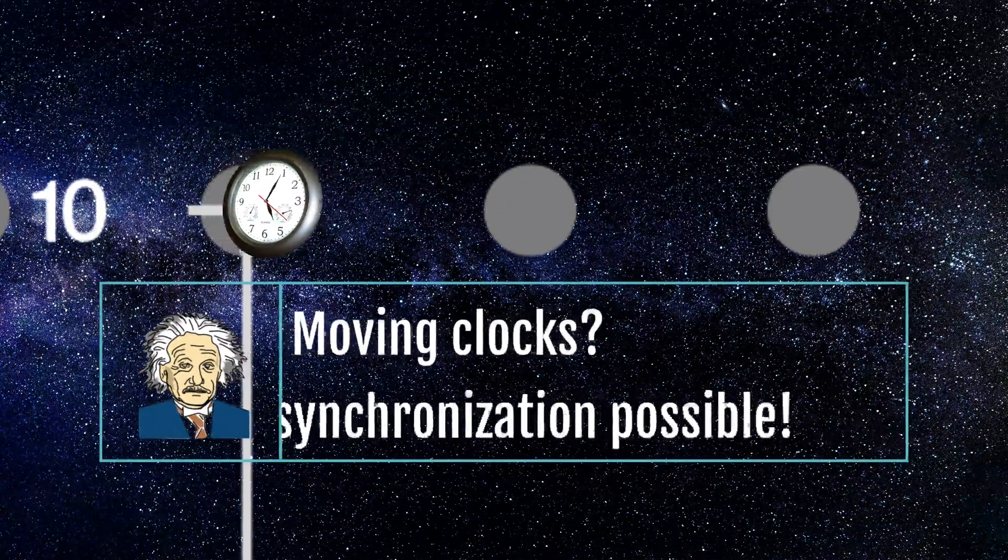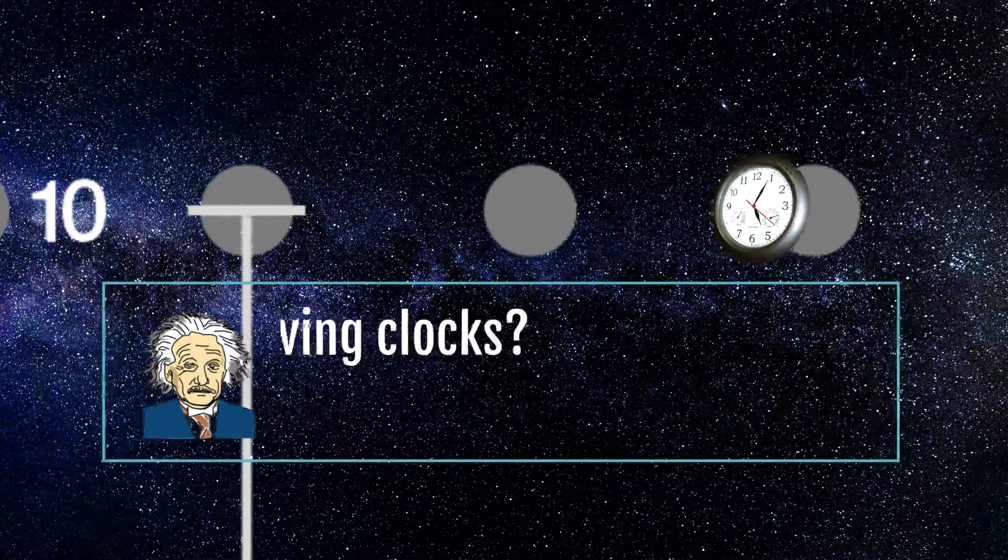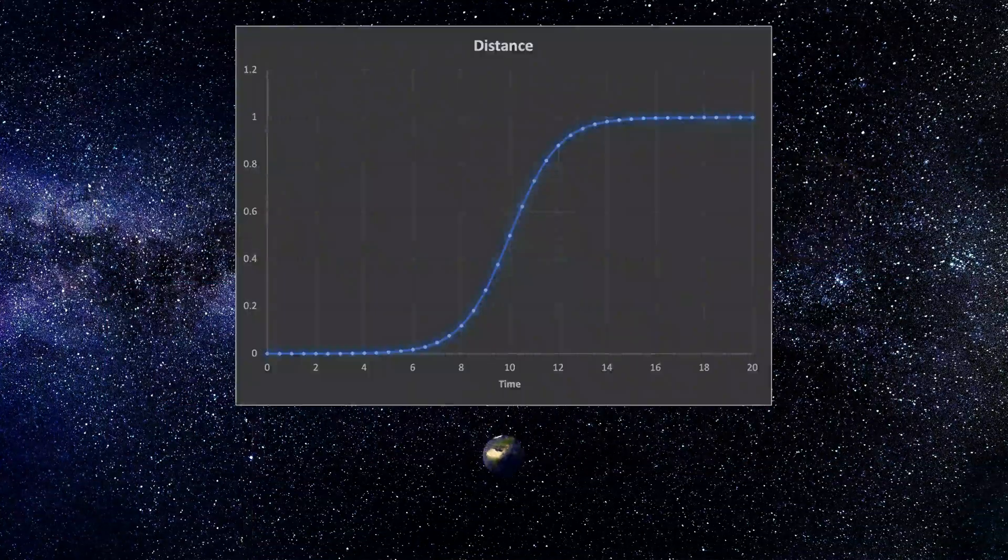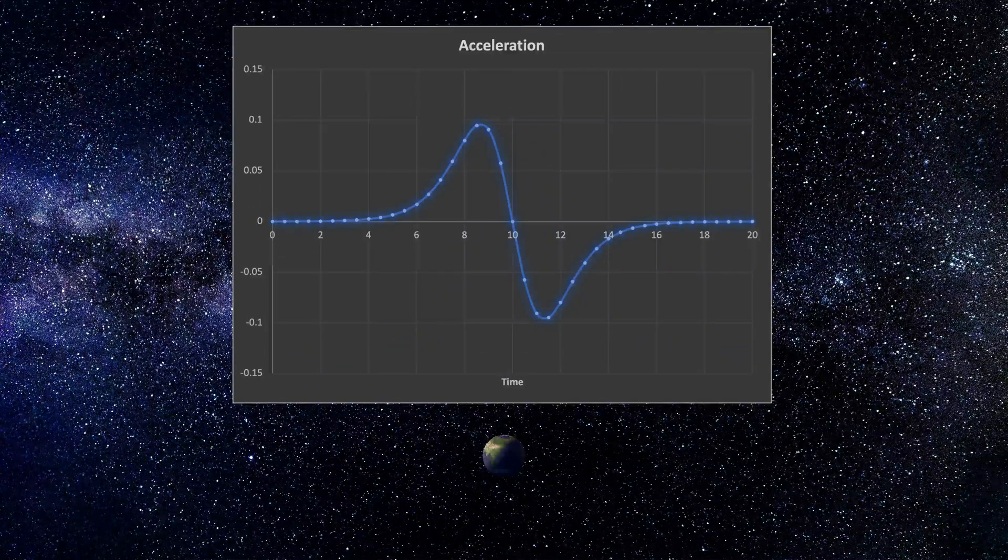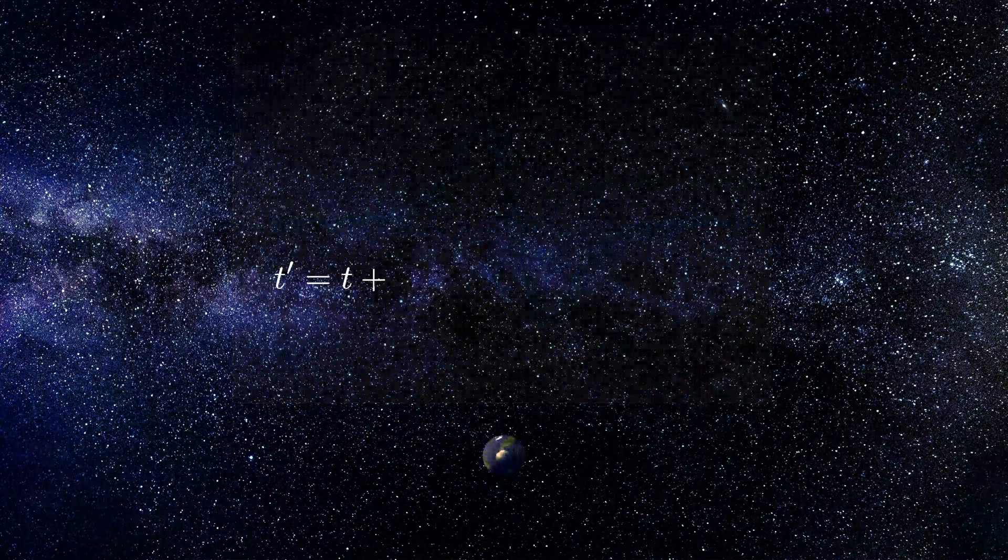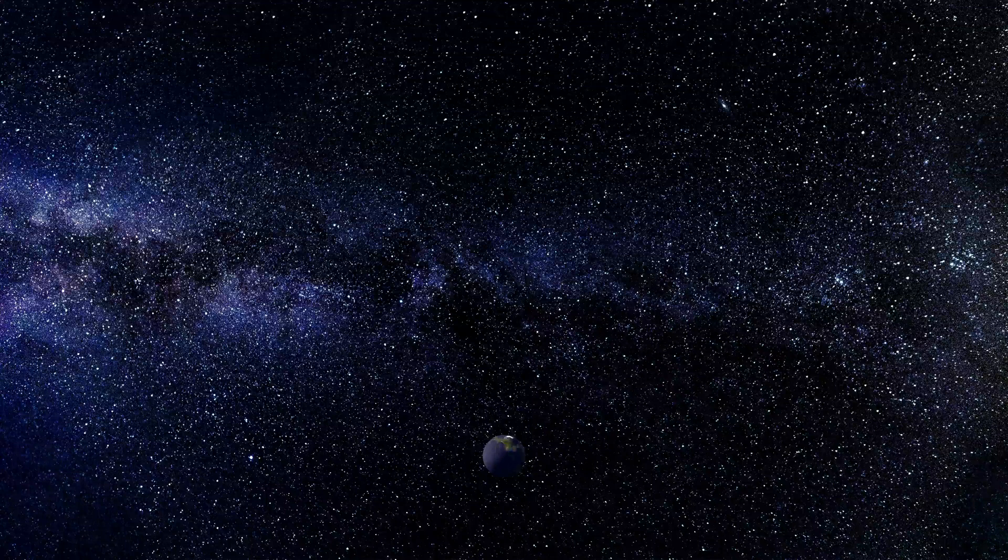Yes, moving them, accelerating and decelerating will destroy the synchronization. Let's say we know the velocity profile of each clock. We can pre-compute and pre-correct all the time dilation effects and get the whole experiment set up. Are we good now?